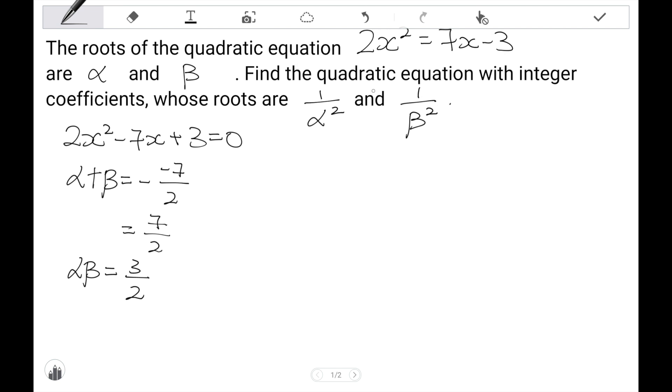Now, the goal is to find out the new quadratic equations, and in order to find out the new quadratic equation, I need to find out the sum of 1 over alpha squared and 1 over beta squared, and the product of 1 over alpha squared and 1 over beta squared. So let's try to find this out. 1 over alpha squared plus 1 over beta squared. I can join them together so that the denominator becomes alpha squared beta squared. The numerator will be beta squared plus alpha squared.